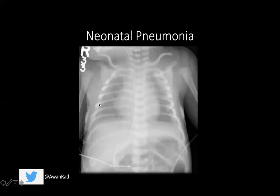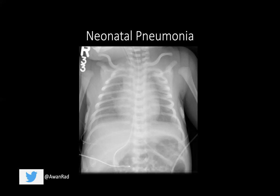Moving on to neonatal pneumonia, most commonly caused by Group B Strep, acquired via the transplacental route or aspiration of infected amniotic fluid. This typically presents in the first two days of life and occurs mainly in preemies. The chest radiographic findings look very similar to RDS — diffuse granular reticular opacities — and sometimes it can be indistinguishable on chest x-ray. The one key finding, seen in two-thirds of patients, is the presence of a pleural effusion with blunting of the costophrenic angle. That's probably the only radiographic feature that can distinguish neonatal pneumonia from RDS.